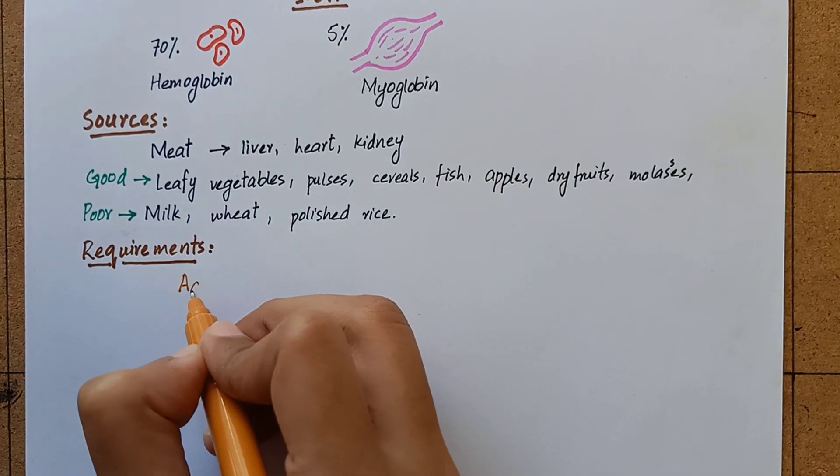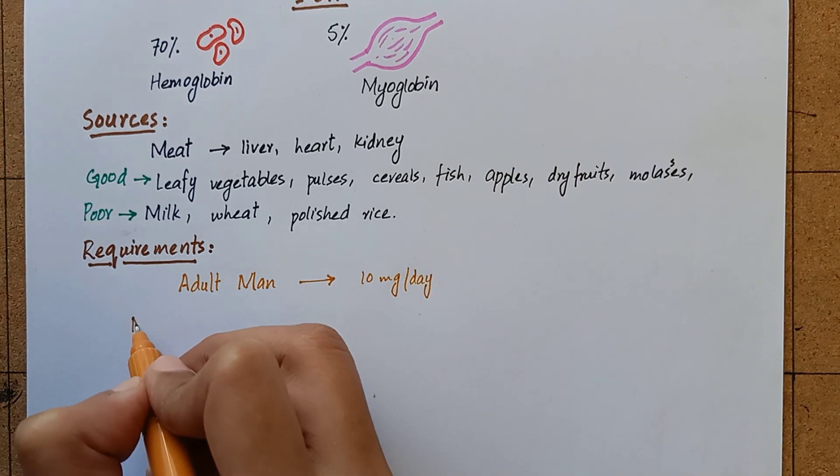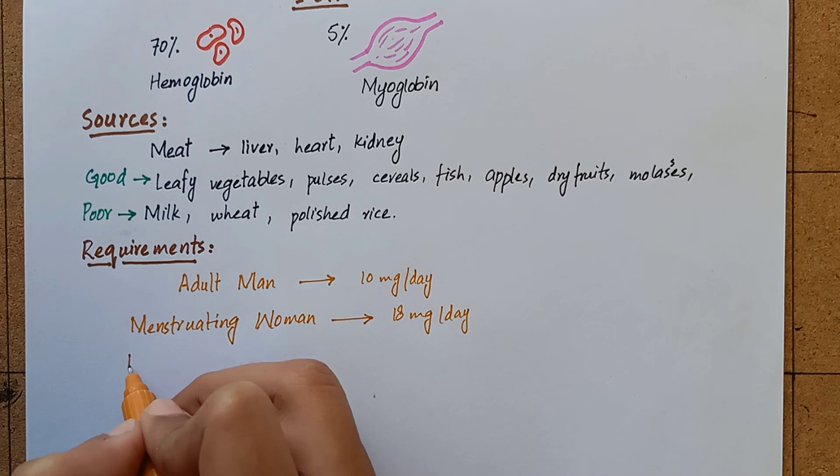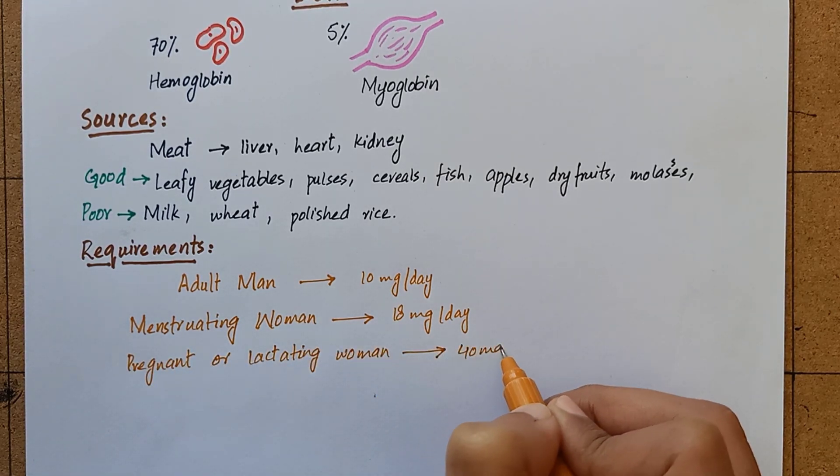The dietary requirement of iron in an adult man is 10 mg per day. A menstruating woman requires 18 mg per day of iron.